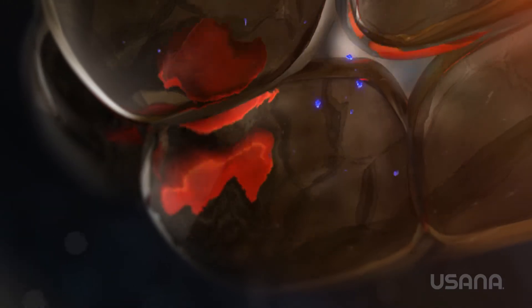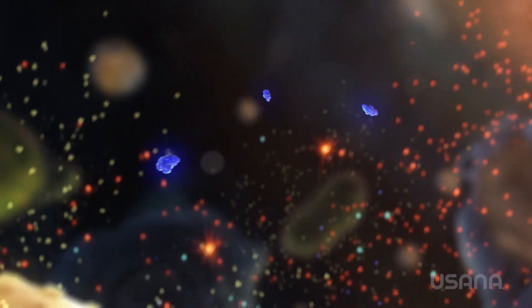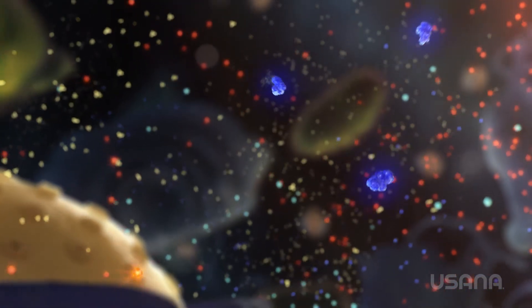Antioxidants go to work in your bloodstream and then enter the cells where the real war is going on. They donate electrons to free radicals, stabilizing them and eliminating their ability to cause damage.